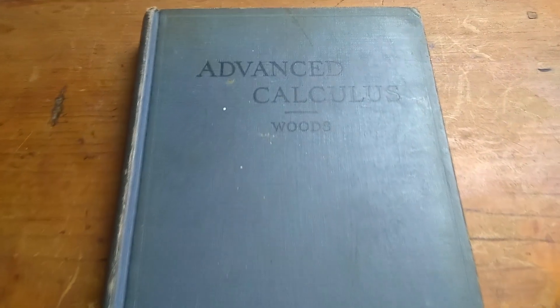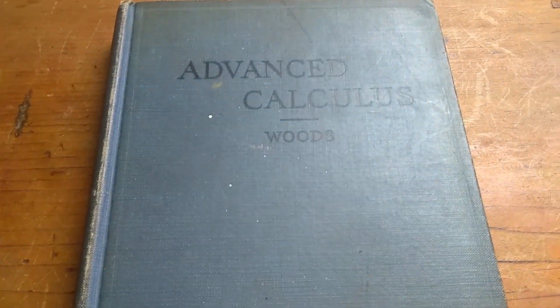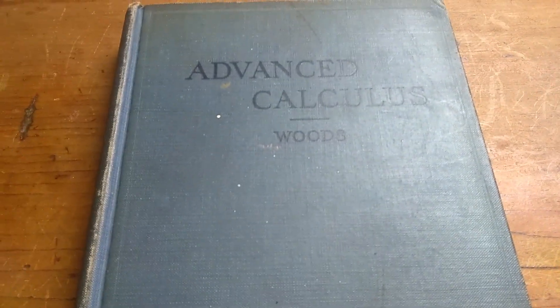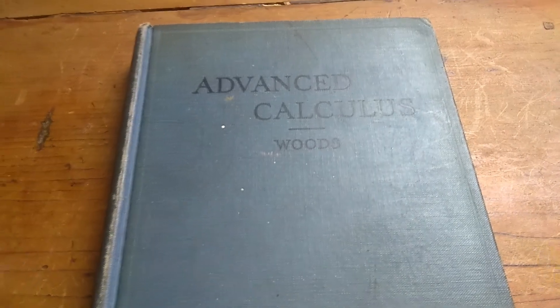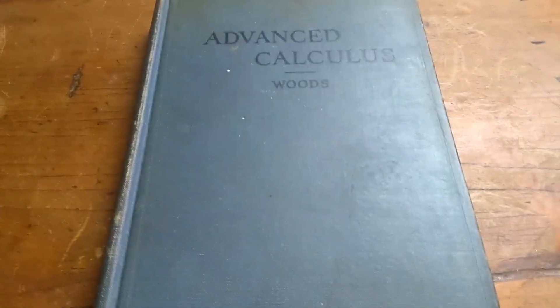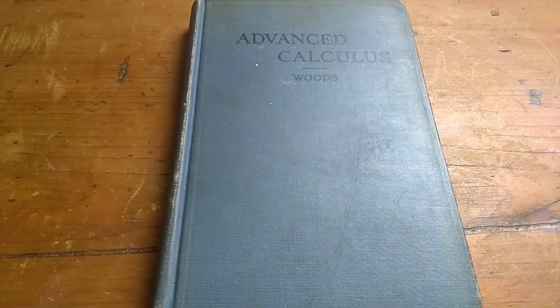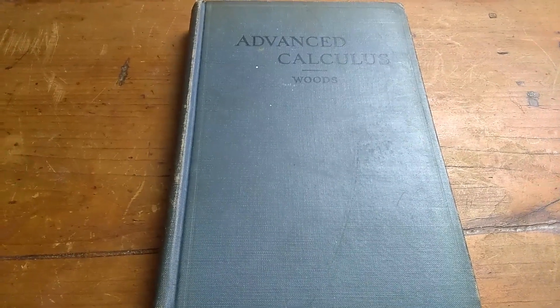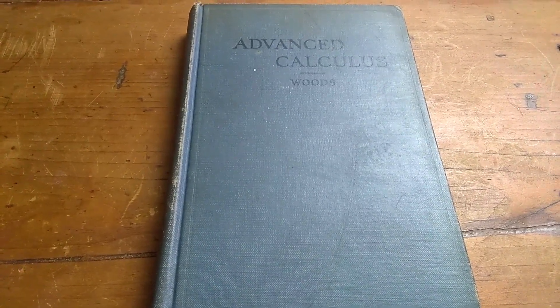The book is called Advanced Calculus by Woods. The reason that it's so expensive is kind of strange. There was this physicist, his name was Richard Feynman, and he won the Nobel Prize. He wrote a book called Surely You're Joking Mr. Feynman.